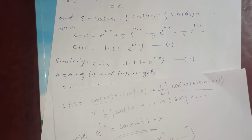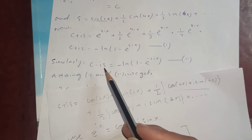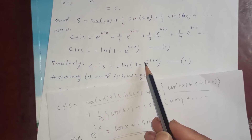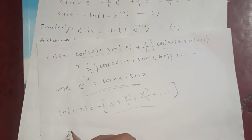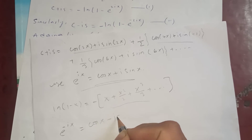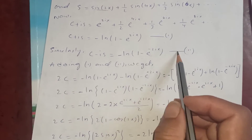Similarly, if you do C minus iS, using the formula e^(-ix) = cos(x) - i·sin(x), you end up with: C minus iS equals minus log(1 - e^(-2ix)). Now adding equations one and two we get what we need.